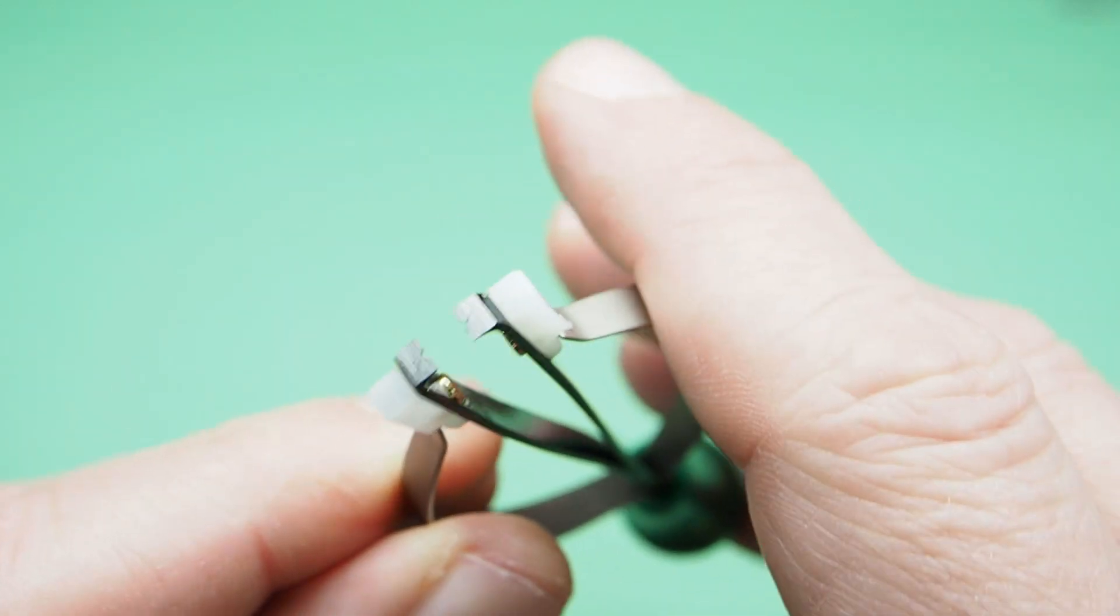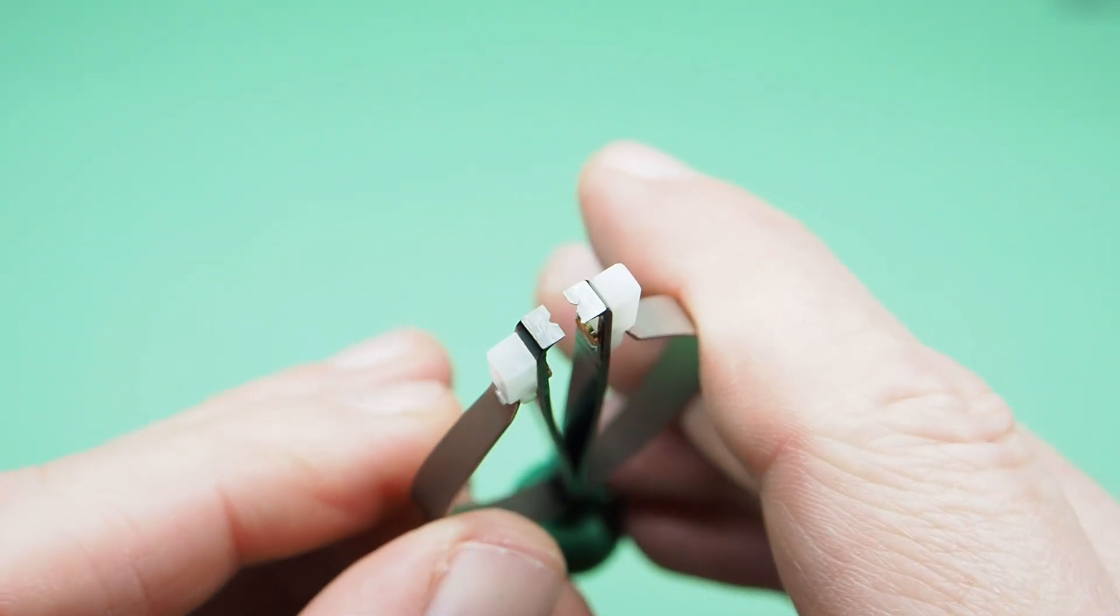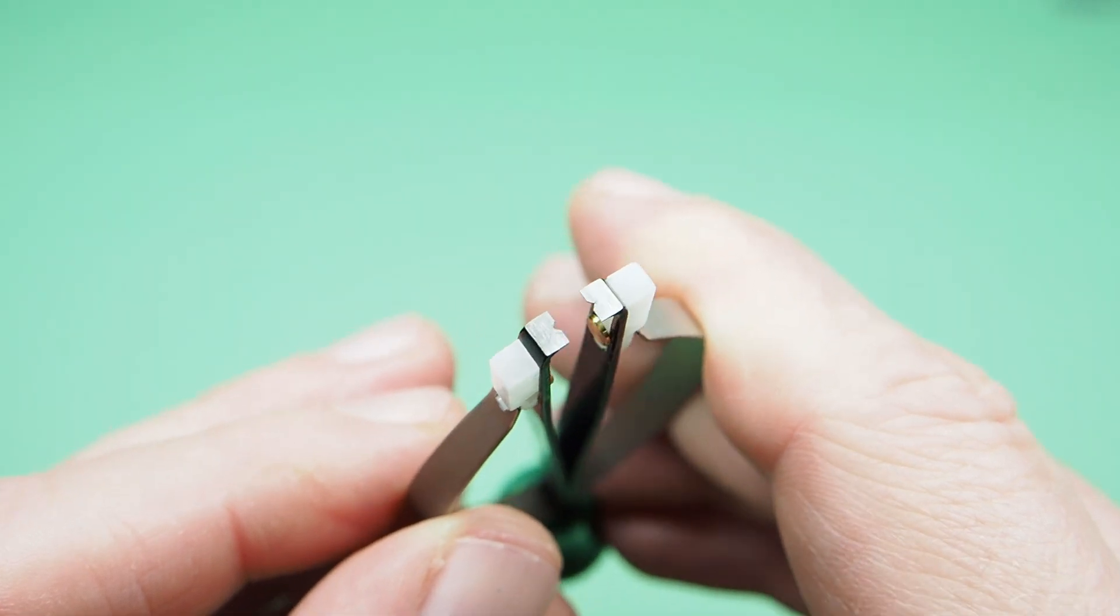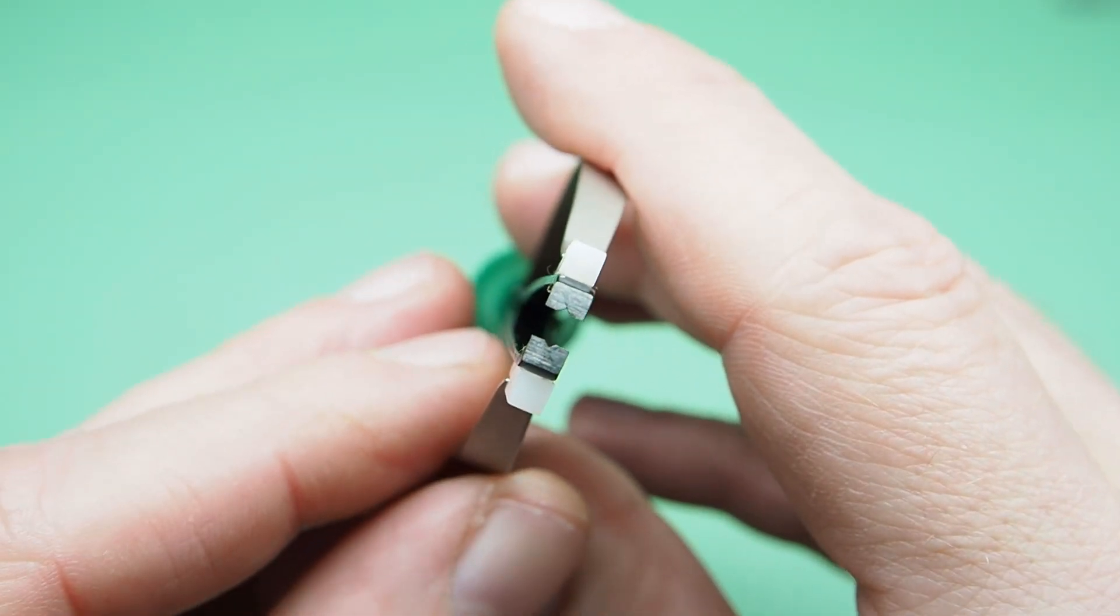As you press on the sides, the tool will close, grip the cannon pinion, retract and remove the cannon pinion.